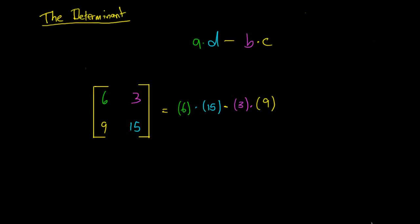So it's going to be 6 times 15 minus 3 times 9. So we know that 6 times 15 is going to be 90, and then we can subtract our 3 times 9 which is just going to be 27. So we have 90 minus 27 and that's going to give us 63.